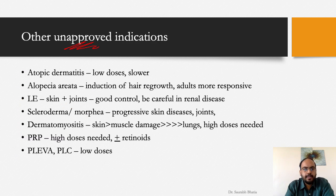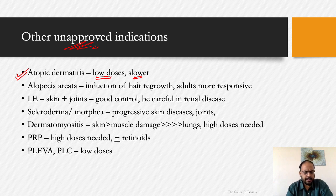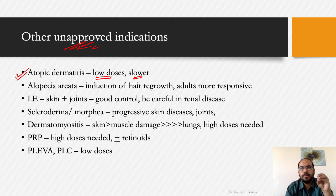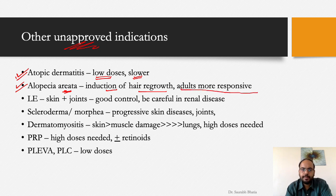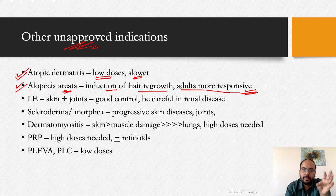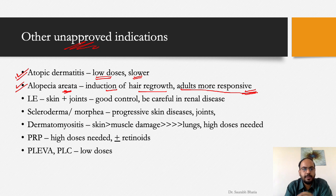In atopic dermatitis, the doses required are lower than for psoriasis — in the range of 10 to 15 mg per week — but the response is also slower. In alopecia areata, methotrexate induces hair regrowth and adults are more responsive than children. In pediatric age group, it is better reserved for progressive disease when better drugs are contraindicated.